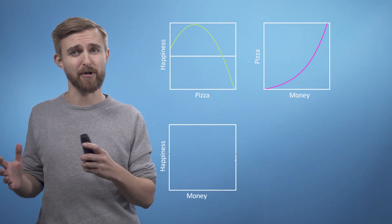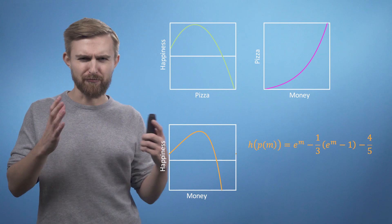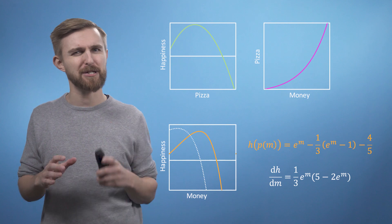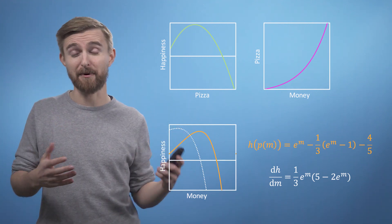Before we finish, let's have a quick look at our money happiness function and its derivative on a graph. As we can see, if you're broke and it's really worthwhile making some money, but the benefit of getting more especially once you have enough pizza decreases dramatically and quickly becomes negative.